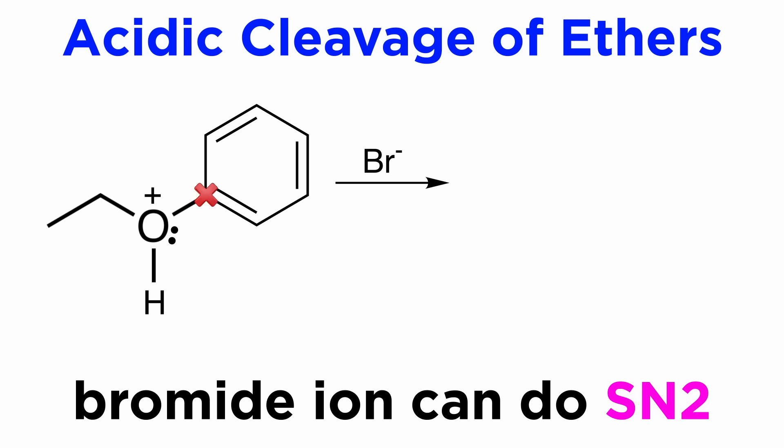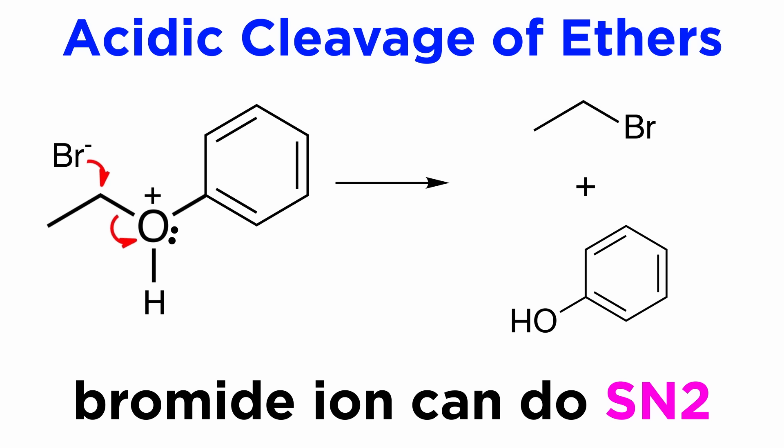A nucleophile is unable to attack the carbon on the benzene ring since it's an sp2 center, but it is able to attack the carbon in the ethyl group that is adjacent to the oxygen. If the bromide ion attacks this position, it can kick off phenol in a simple SN2 reaction, and the positive charge on the oxygen is neutralized. So we end up with phenol and bromoethane, and the ether has been successfully cleaved, meaning split apart.